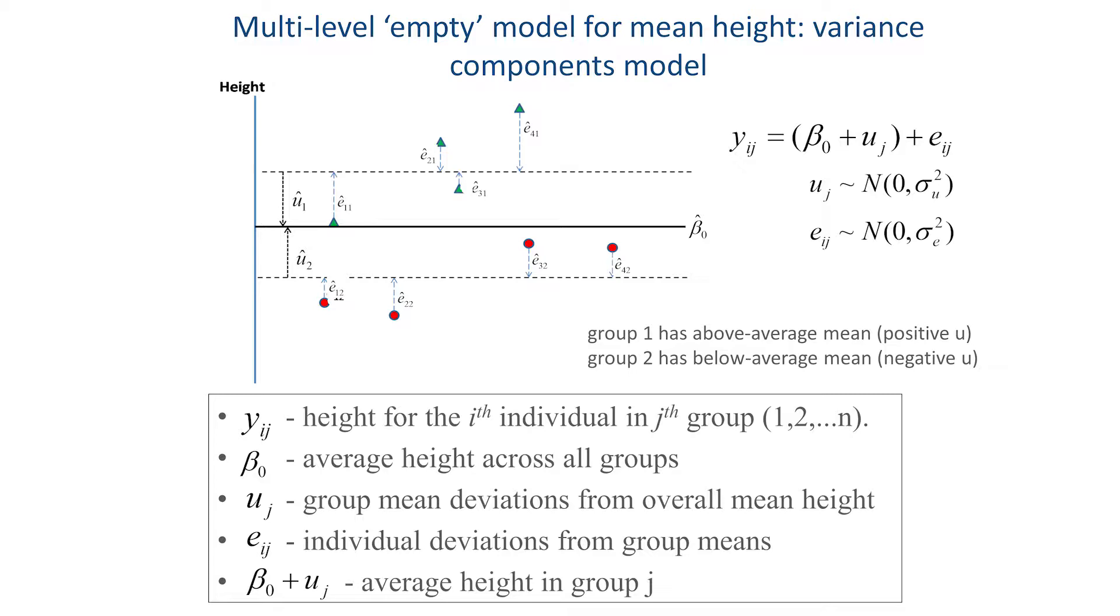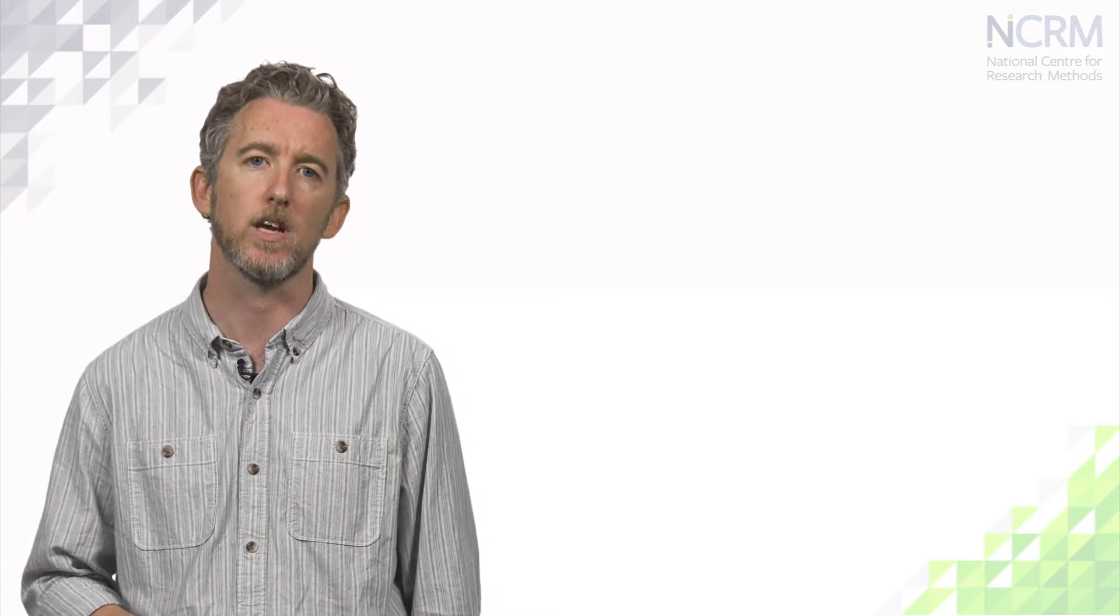Now we've repartitioned the variance between an individual component, σ²ₑ, and a group component, σ²ᵤ. Now we can produce an initial assessment of the importance of groups with the variance partition coefficient.